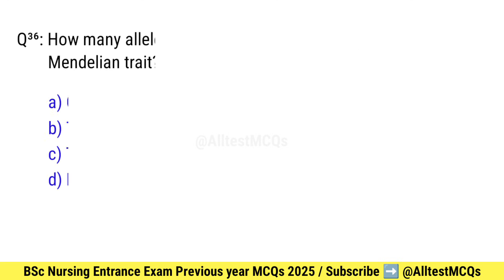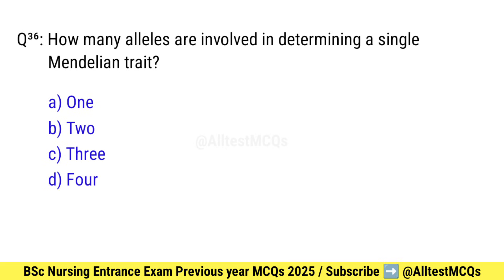Question number 36. How many alleles are involved in determining a single Mendelian trait? Right option is B: Two.